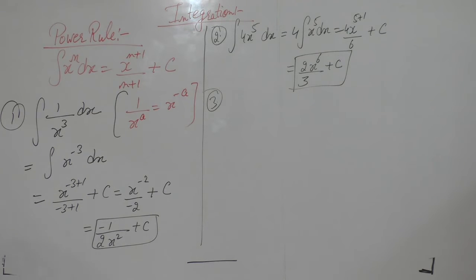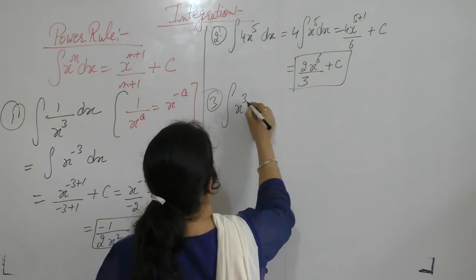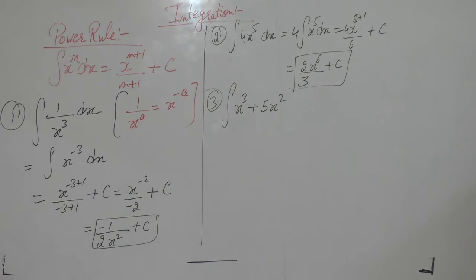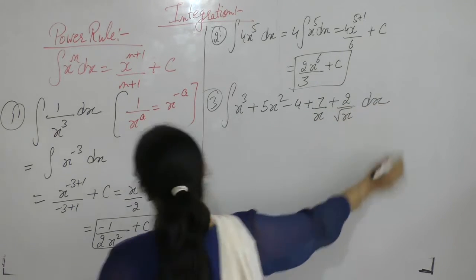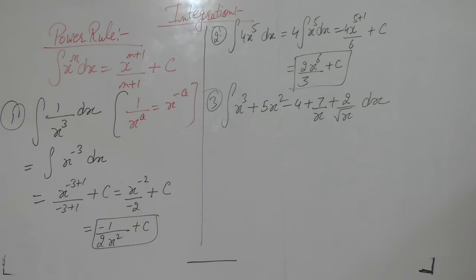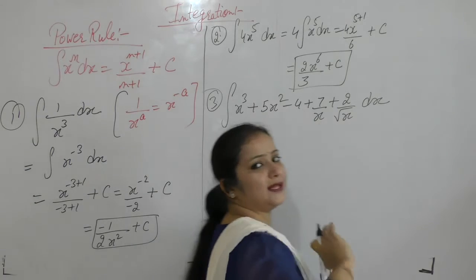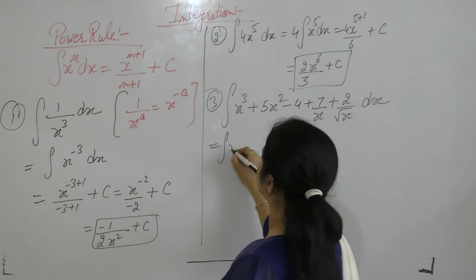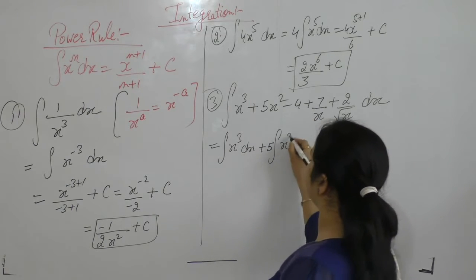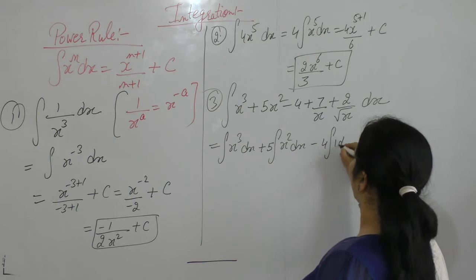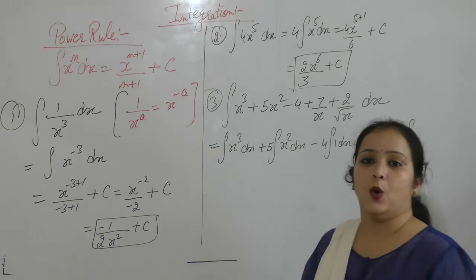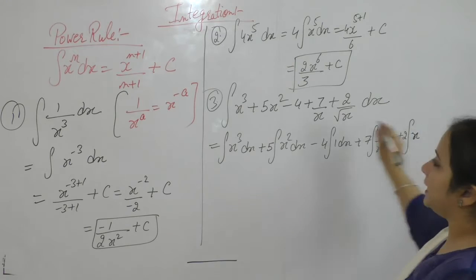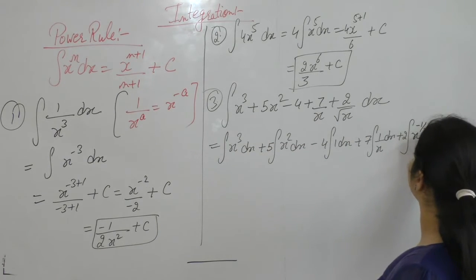Example 3: Integral of (x³ + 5x² - 4 + 7/x + 2√x) dx. We can separate all these terms using the addition sign. We write it as integral of x³ dx, plus 5 times integral of x² dx, minus 4 times integral of 1 dx, plus 7 times integral of 1/x dx, plus 2 times integral of 1/√x dx. Note that 1/√x can be written as x^(-1/2).